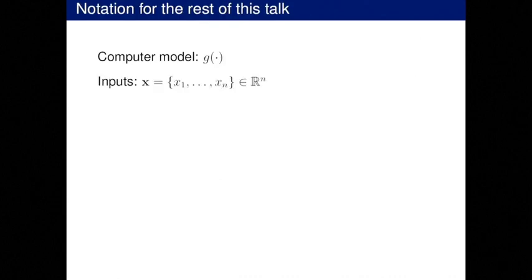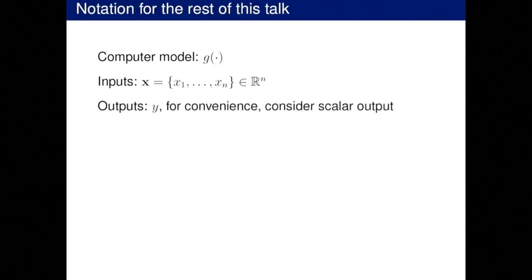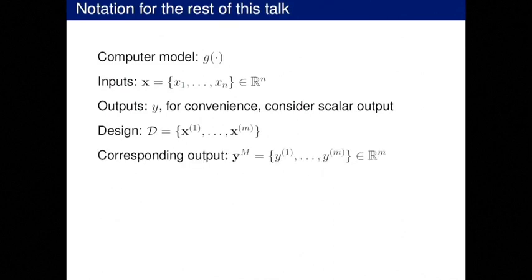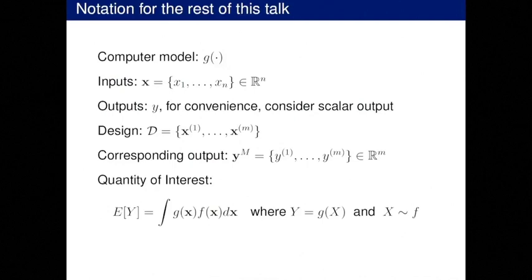Notation for this talk: my computer model is G, my inputs are X from 1 to N — an N-dimensional input space covering parameters, boundary conditions, initial conditions, whatever is important for your problem. Outputs or responses, which I'll take to be scalar, I'll call Y. The design is the set of inputs I run the computer model at, indexed with a script D, with M runs. Then I have the corresponding output YM. For simplicity, I'll take my quantity of interest to be the expectation of this computer model under some distribution of the inputs.